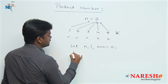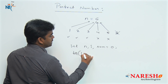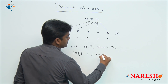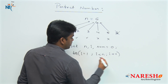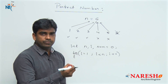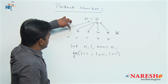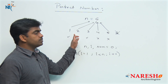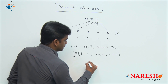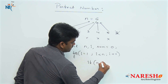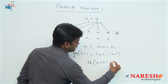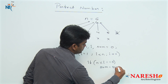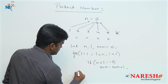The logic is: we repeat a loop where I starts from 1 and goes up to less than N, with I++ each iteration. Every time we check if N is divisible by I — that is, if N mod I equals 0 — then we add I to the sum: sum = sum + I.